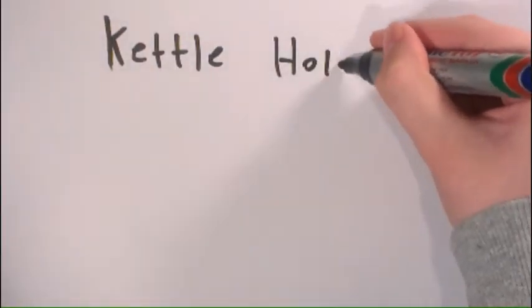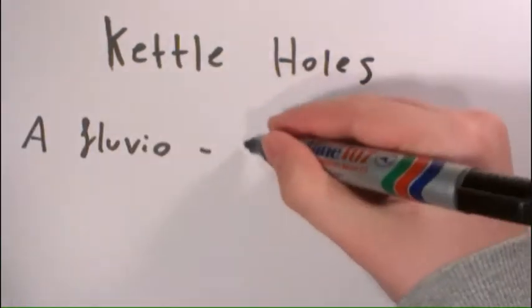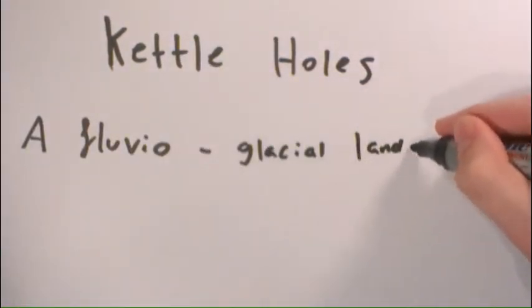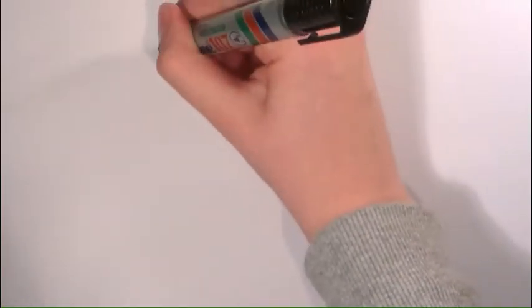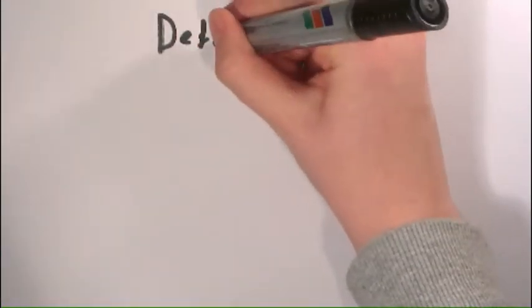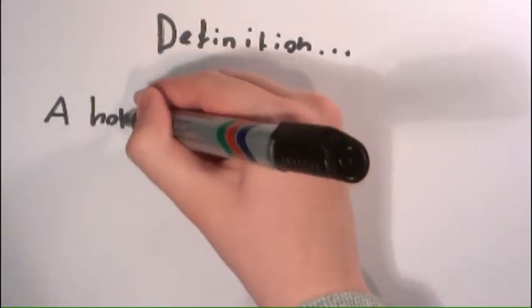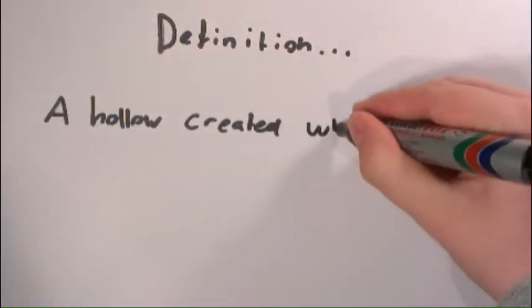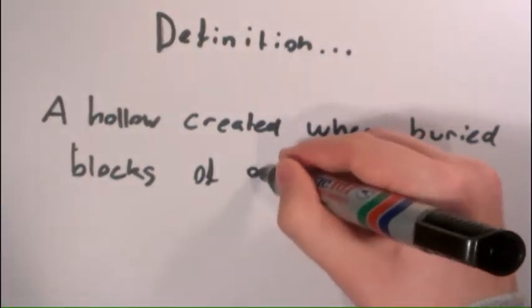Kettle Holes: a fluvioglacial formation. What is a Kettle Hole? The definition of a Kettle Hole is a hollow created when buried blocks of glacial ice melt out.